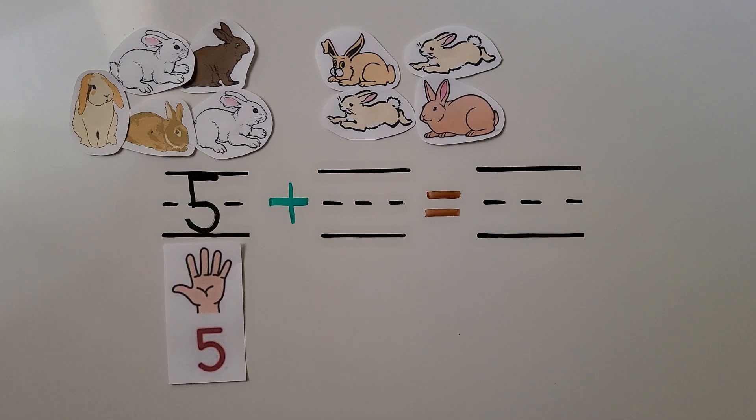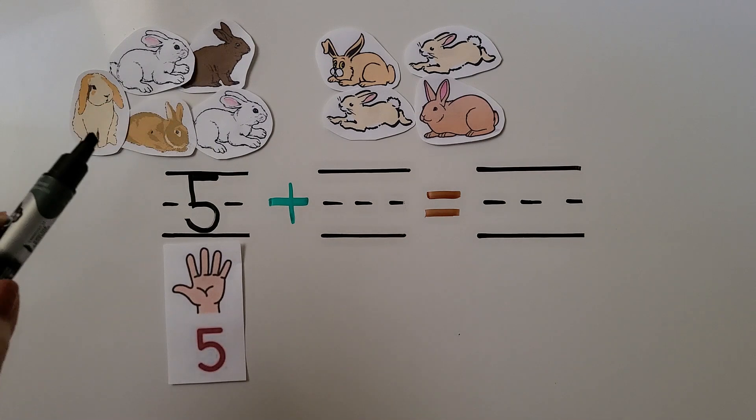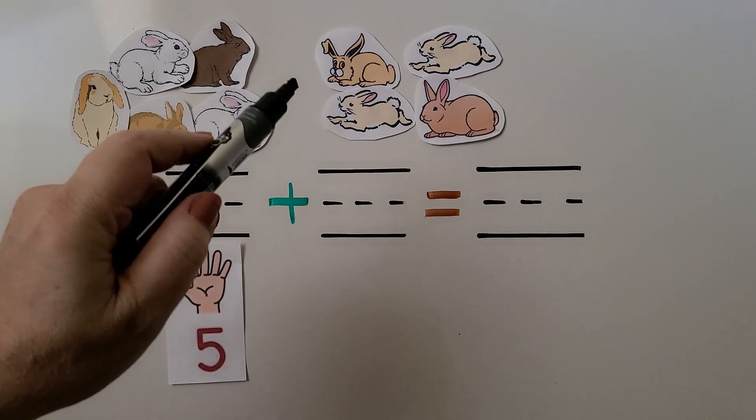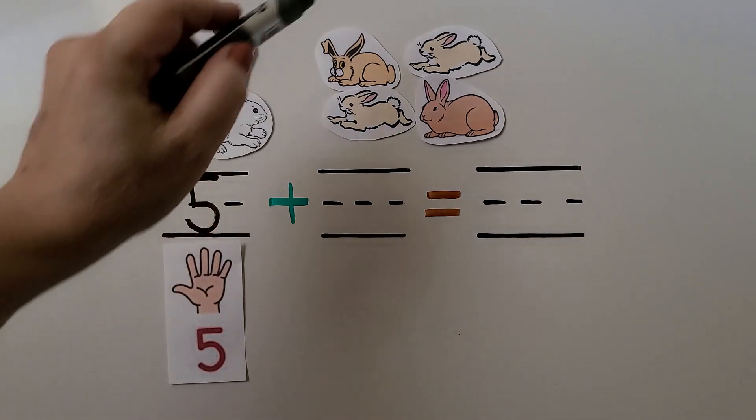There are five rabbits. Some more rabbits come. Let's circle the group of rabbits that come. Here are one, two, three, four, five. We have five here. This is the group of rabbits that come.